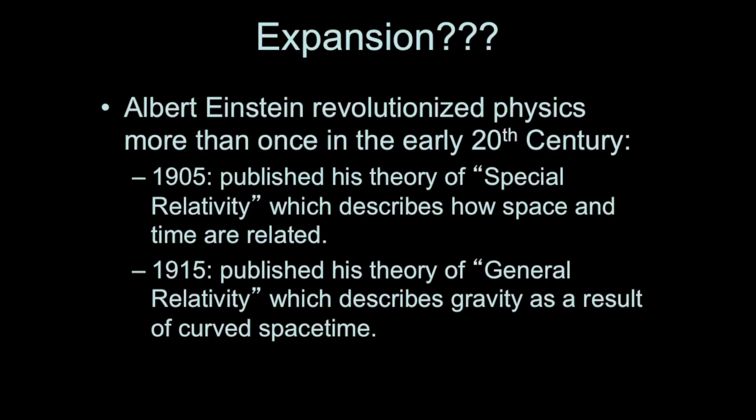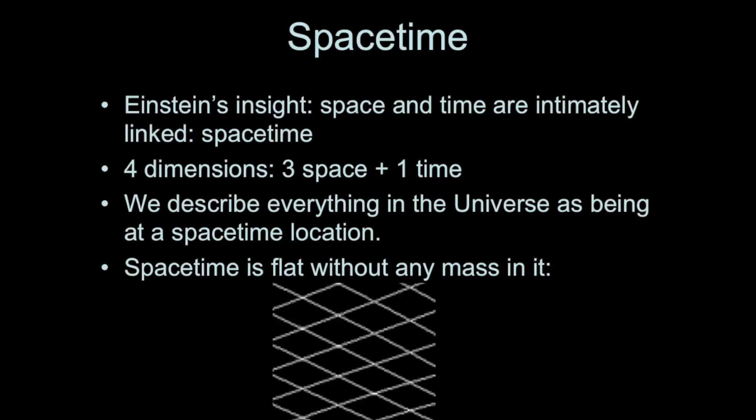In 1915 Einstein published his theory of general relativity. And general relativity is a theory of gravity. And it's even bigger than that. It describes how space-time operates, how masses inside space-time affect space-time itself, and how it can be dynamic. How it doesn't have to be a static set of locations in space and time. Space and time are intimately linked together.